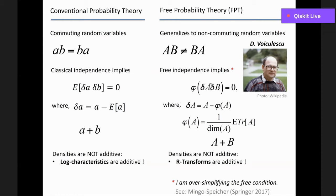In free probability, densities are not additive but what is additive is the R-transform. A matrix A and a matrix B both have an R-transform, and the R-transforms are additive for free matrices. This additivity gives you a way to relate the two pieces to their sum. The next slide is a little technical — I put it for the sake of completeness for those who want to see the details — but it's not a prerequisite for what follows.